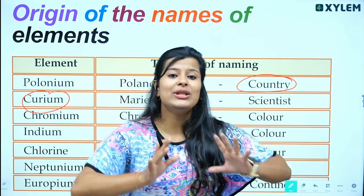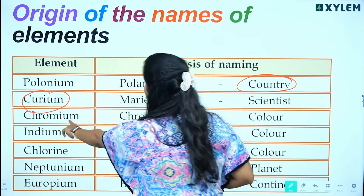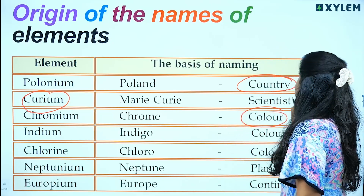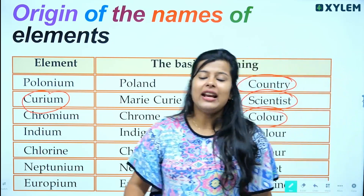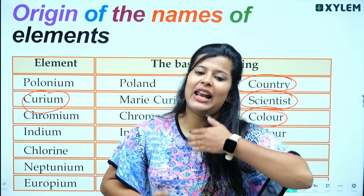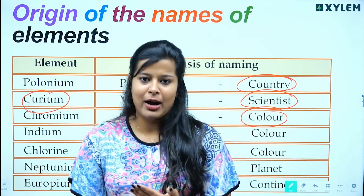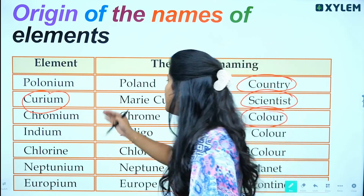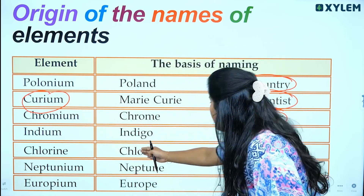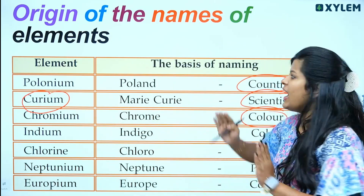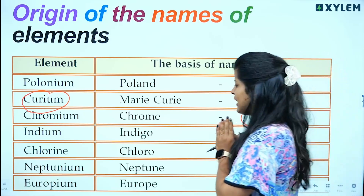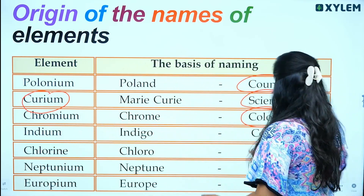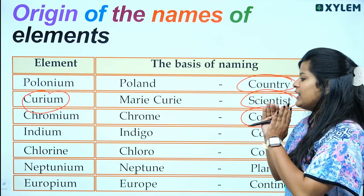Then chromium — 'chromium' comes from 'chroma,' meaning color in Greek. So the name is based on color. Then chlorine also comes from a word meaning color or greenish color.